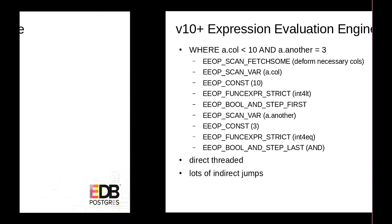Then we access the value of column a.col, evaluate the constant value, and use a function to determine the result of a.col < 10. In Postgres, all operators and functions are implemented using the same facility you can use to extend Postgres — they're just C functions that get called. So the less-than function will be called, return something, and then we check the AND condition. If the first side is false we short-circuit, then do the same for the other expression.